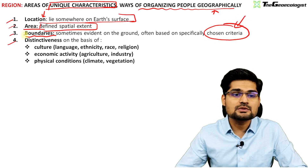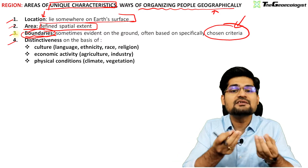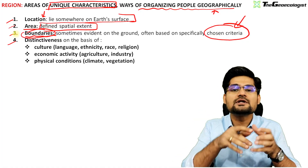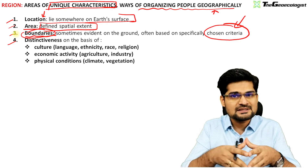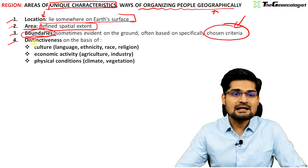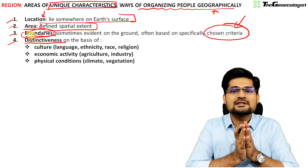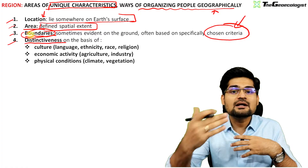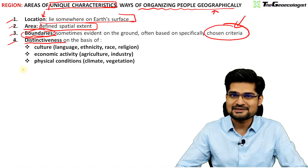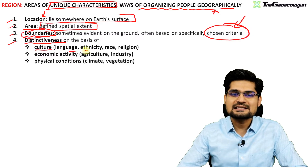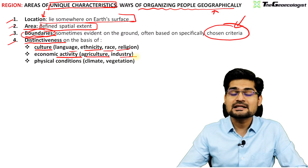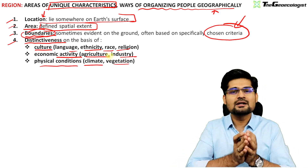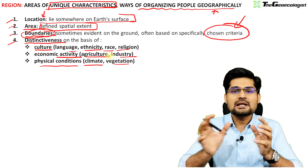Boundaries are drawn on the basis of a given criteria, and who decides the criteria depends upon the scholar, person, or authority making that region for a developmental or other purpose. Distinctiveness gives a region its identity — separating it from others. Cultural distinctiveness includes language, ethnicity, race, and religion; economic activity includes primary, secondary, tertiary, and quaternary activities; physical conditions include vegetation, climate, and soil.